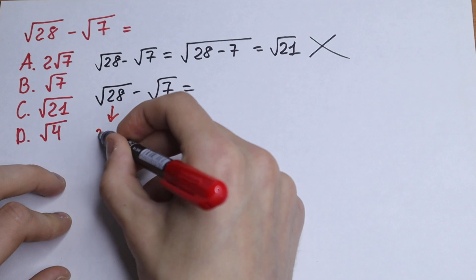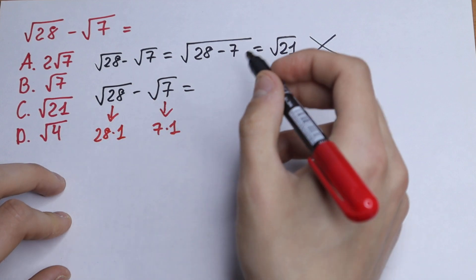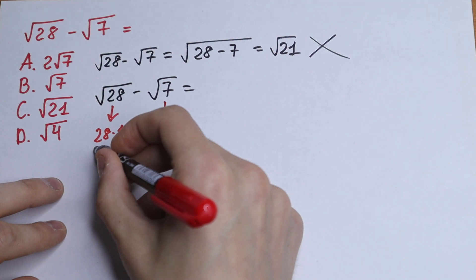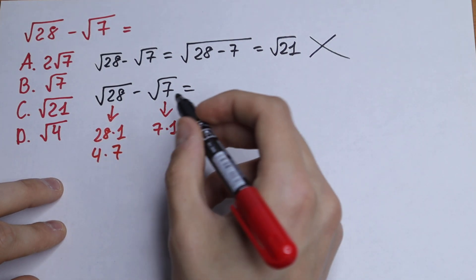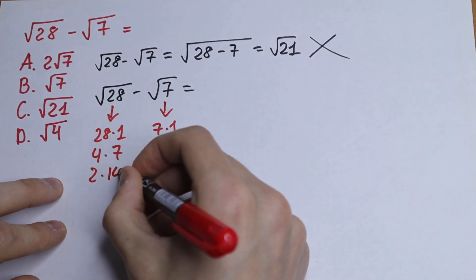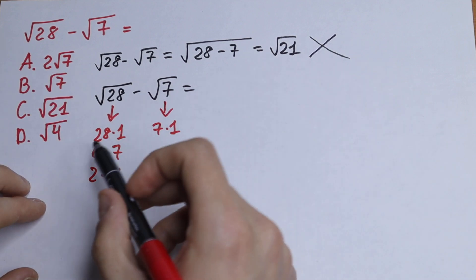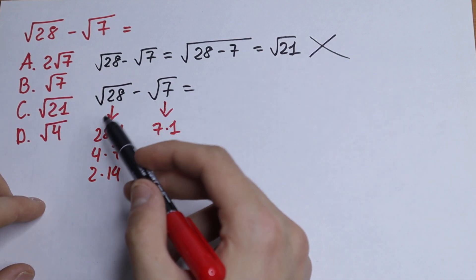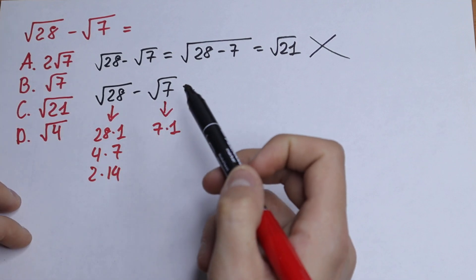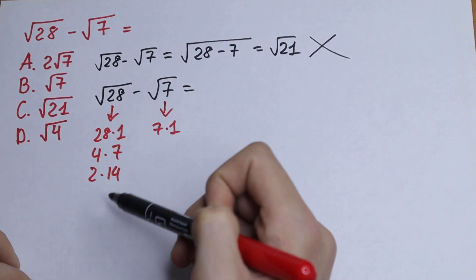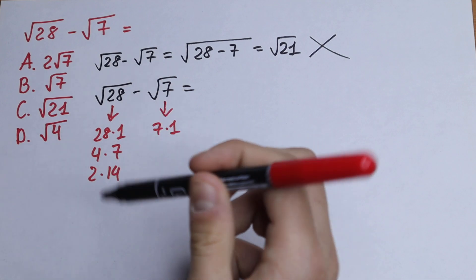Of course, 28 times 1, which is not good for us because it will be the same. 4 times 7 and 2 times 14, of course. We have three ways how to express this 28. The first way is not good for us. Second, 4 times 7 is good for us, and the third is not good for us. I'll show later why.